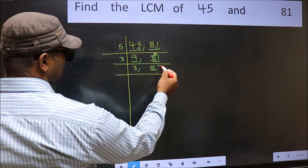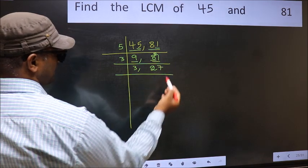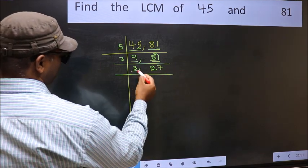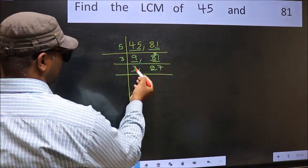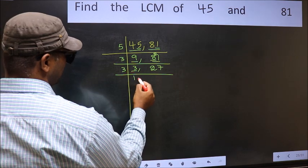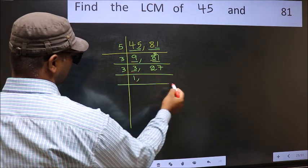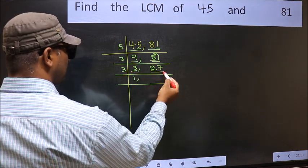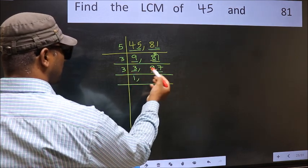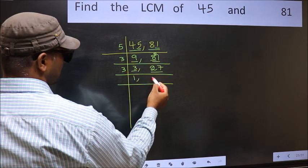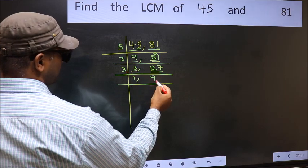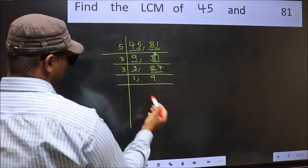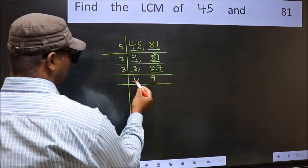Now we have 3, which is a prime number, so 3 divided by 3 is 1. For the other number, 27: in the 3 times table, 3 nines are 27, so 27 divided by 3 is 9.